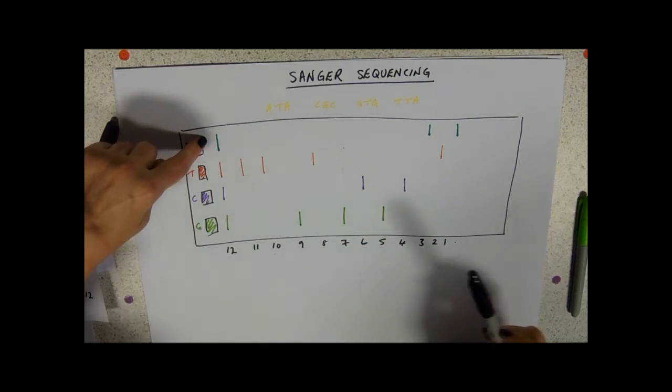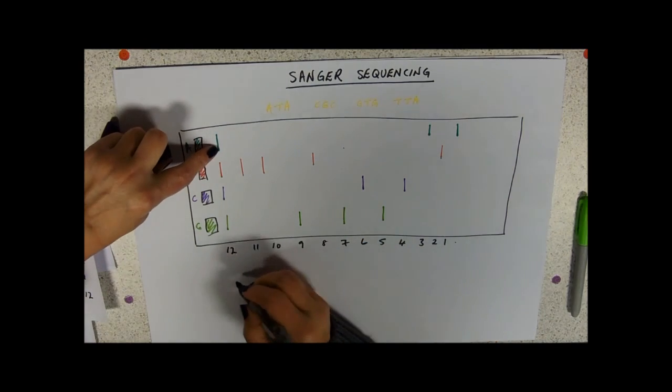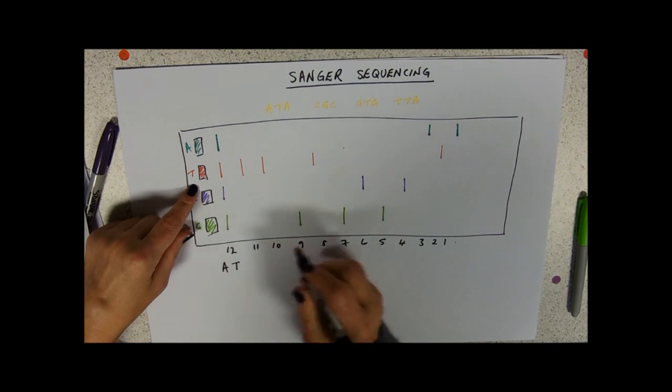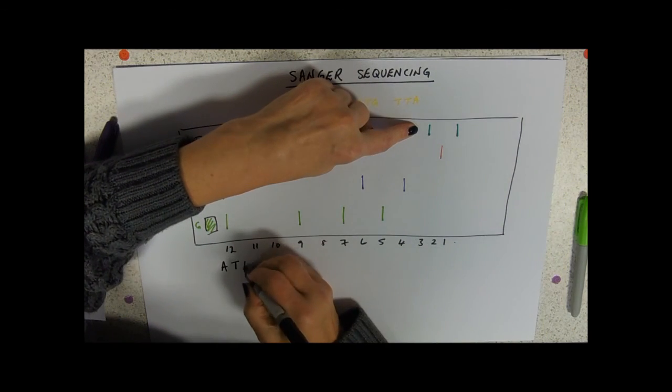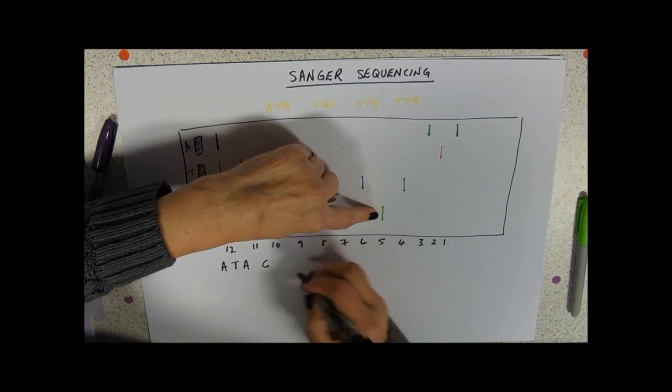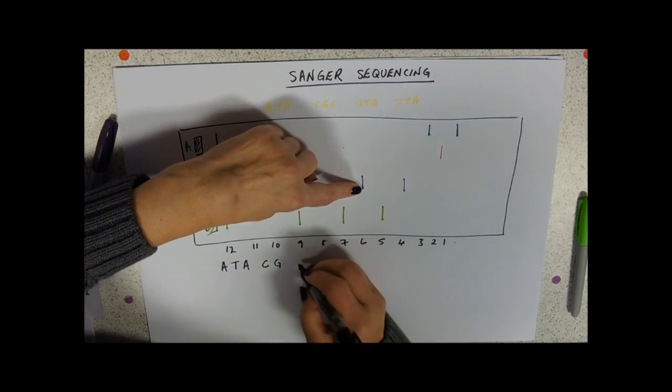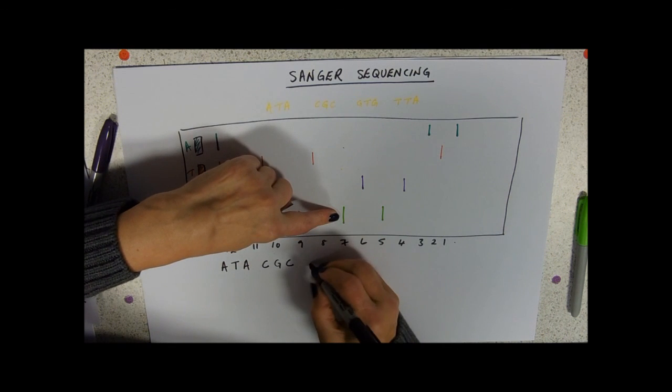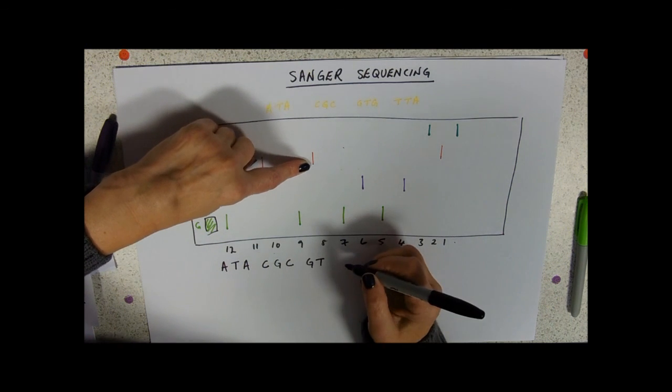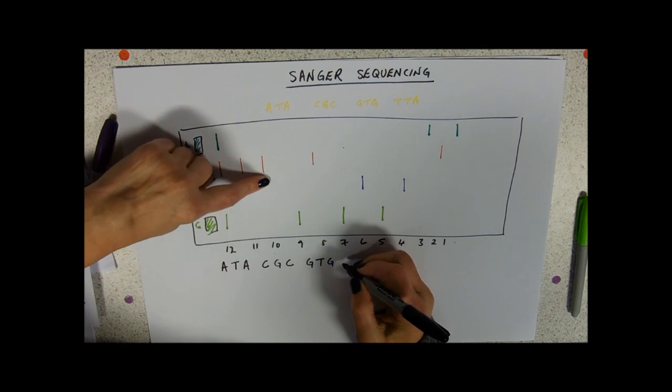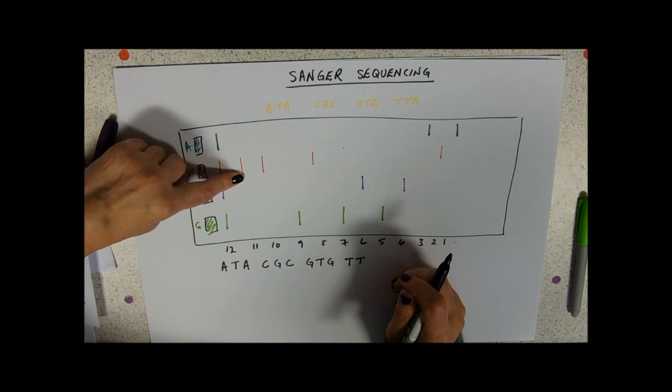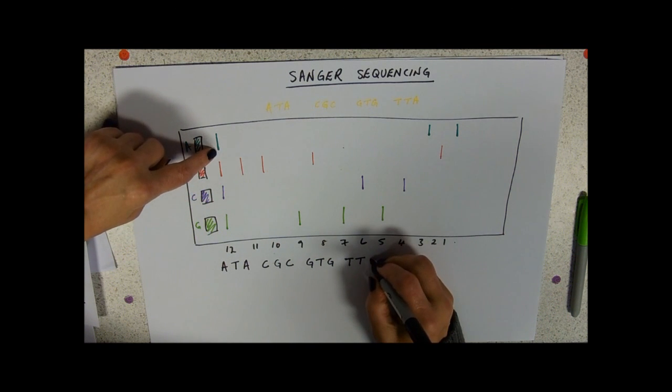So our very shortest fragment, so this is the first place that it has been stopped, is in the A zone. So our first base is going to be an A. It's then stopped at a T, it's then stopped at an A, it's then stopped at a C, it's then stopped at a G, it's then stopped at a G again, it's then stopped at a T, then a G, then a G, then a T, then a T, then a T, and then our last base, of course, is A.